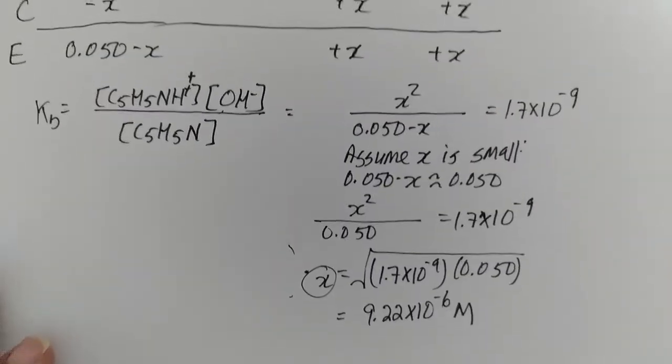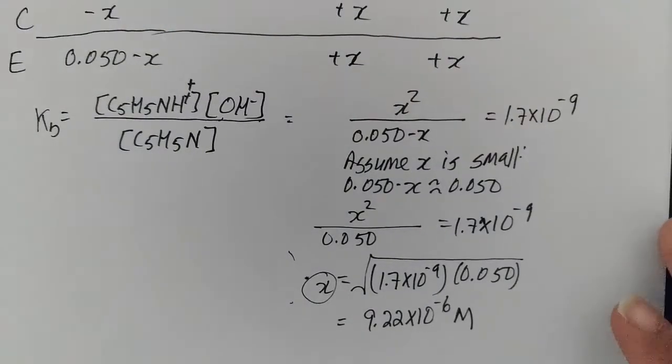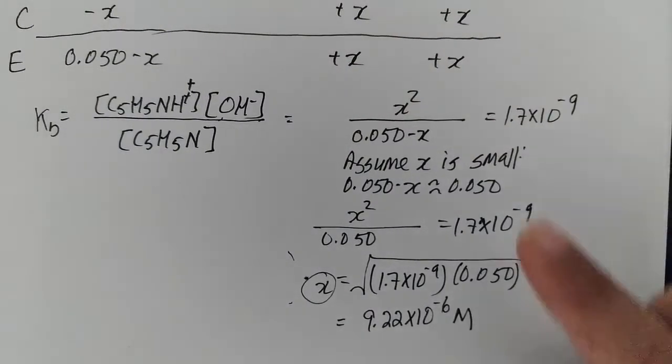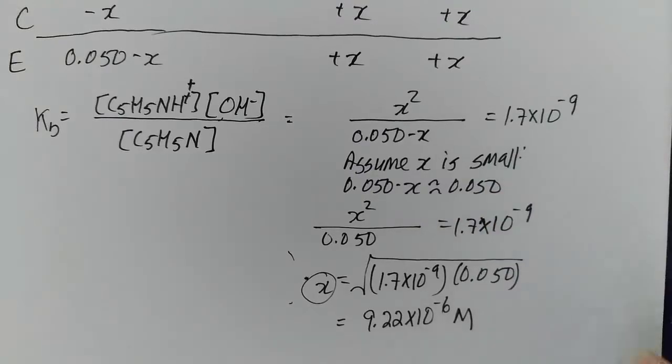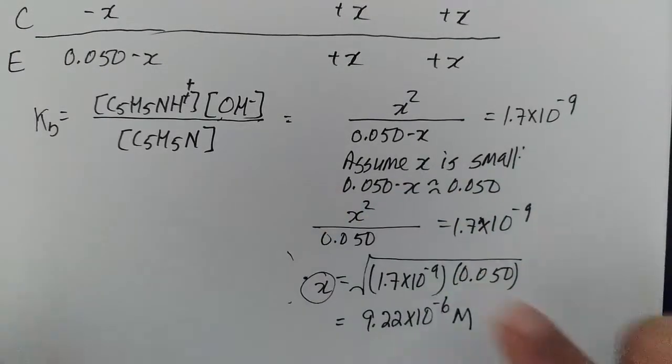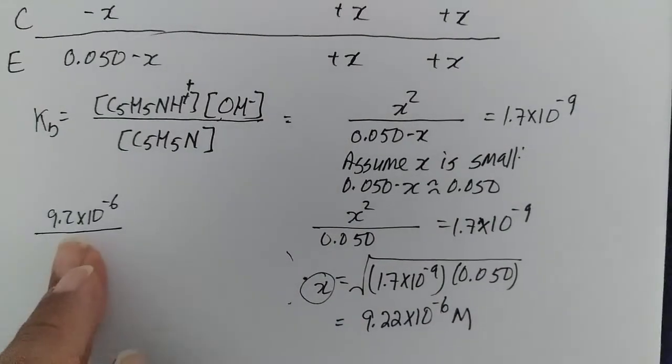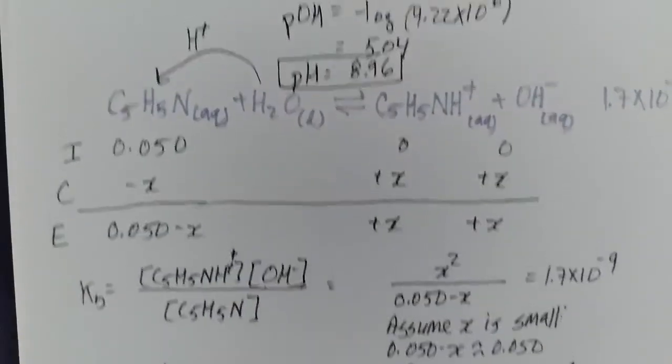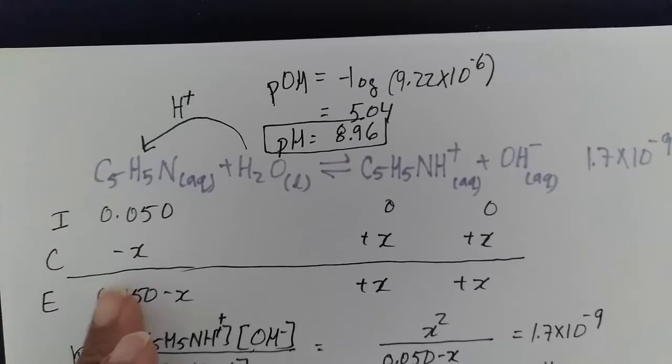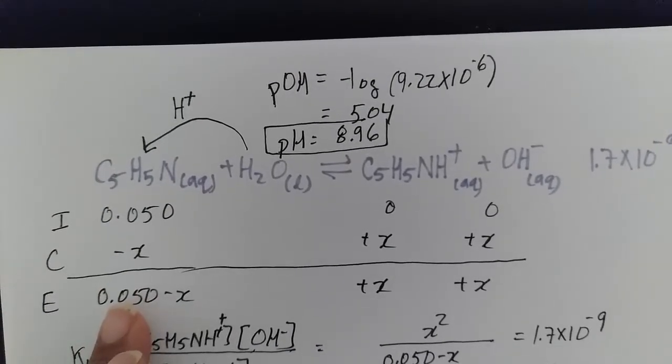So this low ionization assumption, I just want to lecture about that. This assumption is valid because we take our X value, which we calculated here as 9.2 times 10 to the minus 6, and divide it by the initial concentration in the bottle. So the initial concentration in the bottle is 0.050.